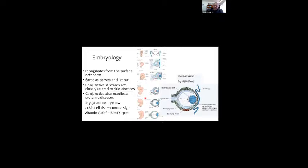Embryology: it originates from the surface ectoderm which is the same as the cornea and limbus. People from the same origin are likely to have the same problems, so you might find a correlation between corneal diseases and conjunctival diseases. The surface ectoderm also produces your skin, so don't be surprised if your conjunctiva is affected when you have some skin diseases. Some allergic skin diseases like eczema will also be associated with allergic conjunctivitis. The conjunctiva also manifests systemic diseases like jaundice, sickle cell disease, and vitamin A deficiency.